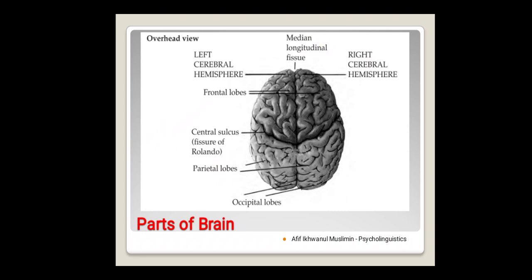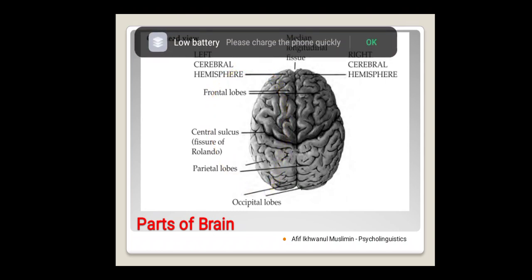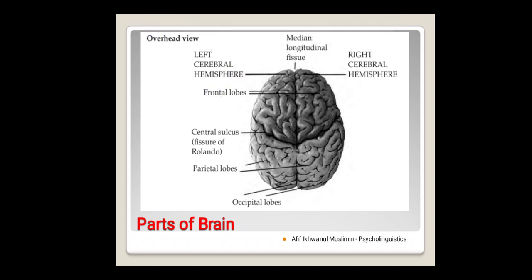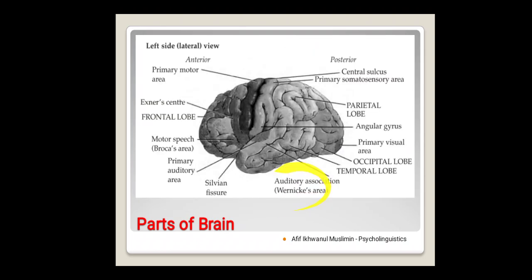To make it clearer, there are some parts of the brain. From the overhead view, here we have what is called the right hemisphere and you also have what is called the left hemisphere. This is the front part of the brain and here is the back part of the brain. So in the brain we have what is called the frontal lobe, we have parietal lobe, we have occipital lobe.